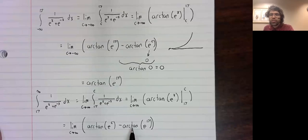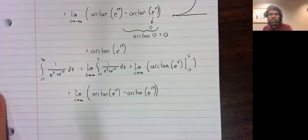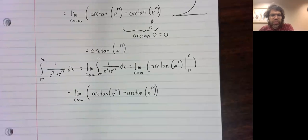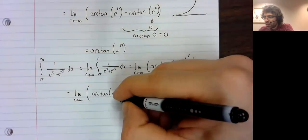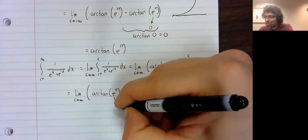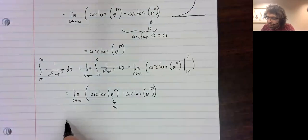Now, this is a constant. It's not causing any trouble. This is a little trickier. So remember, as C goes to infinity, E to the C also goes to infinity.